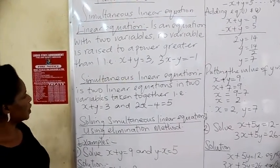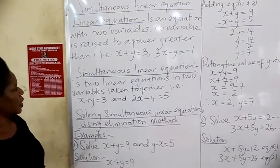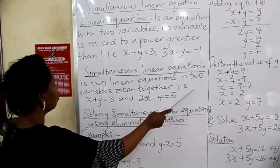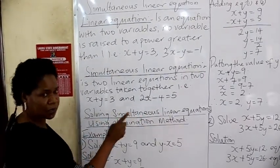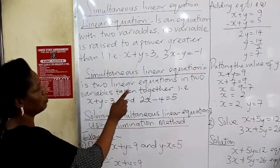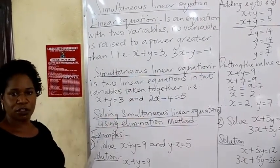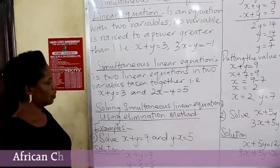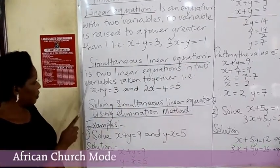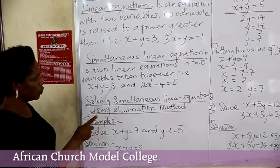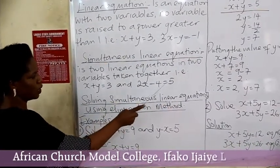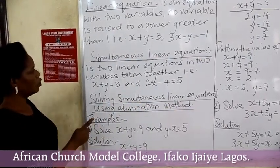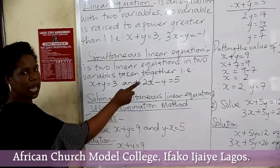Now we move to simultaneous linear equations. A simultaneous linear equation is two linear equations in two variables taken together. When you have two linear equations and you solve them together, you have simultaneous linear equations. For instance, if you have x plus y equal to 3 and 2x minus 4 equal to 5, by the time you solve them together, you are going to have simultaneous linear equations.